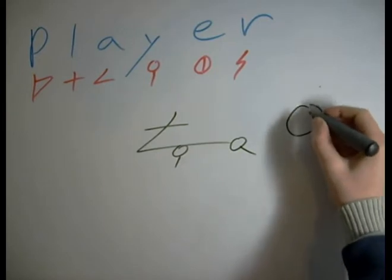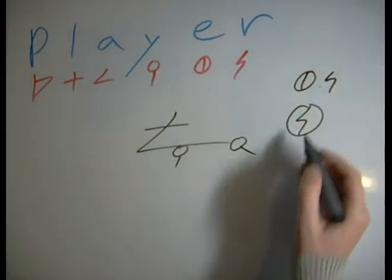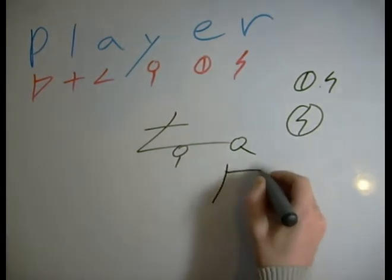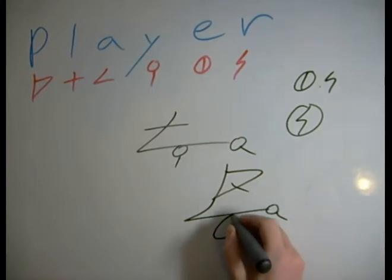Well, we've got E, R. That's a simple combination. You simply draw the R inside of the E's center bar, and we've got E, R. So we can go P, L, A, Y, E, R.